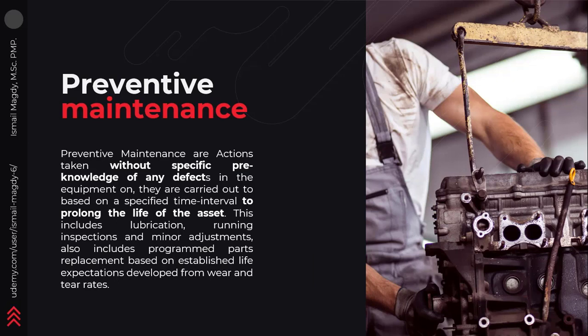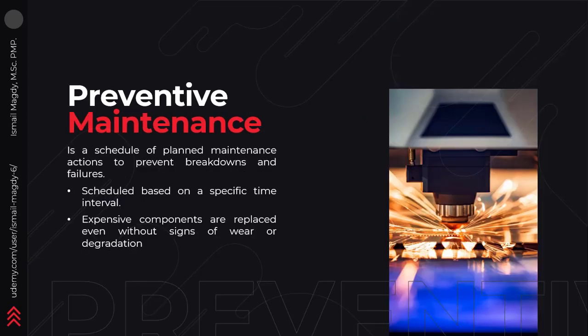Preventive maintenance are actions that are taken without a specific pre-knowledge of any defects in the equipment, which means that we don't wait for the equipment to fail or even show any early signs of failure. Those actions are taken based on a defined time interval and they are carried out to prolong the life of the asset and to preserve its performance.